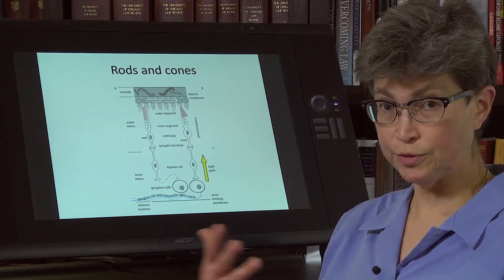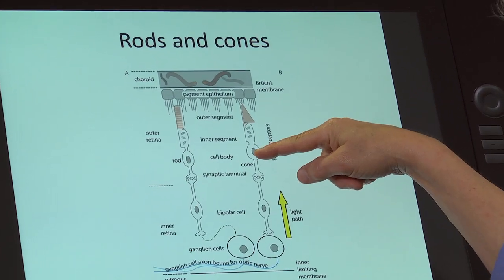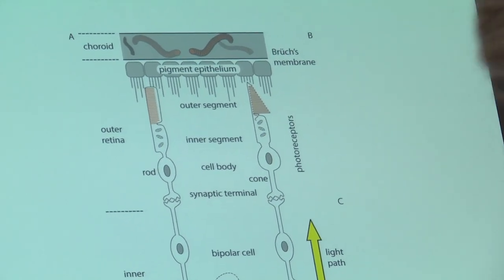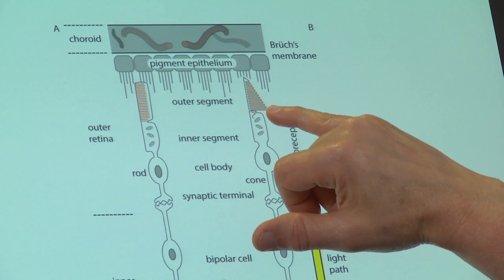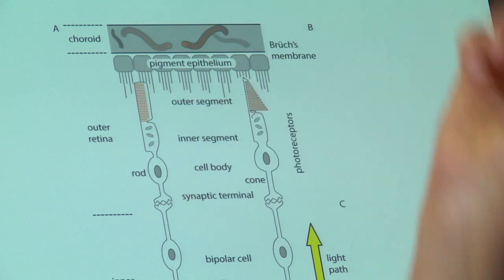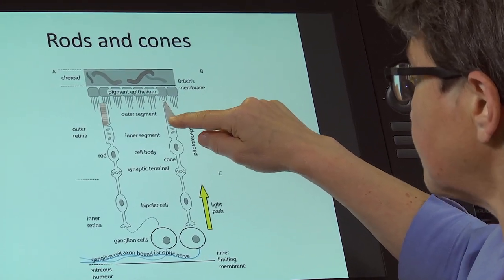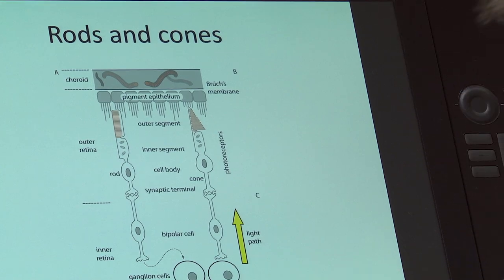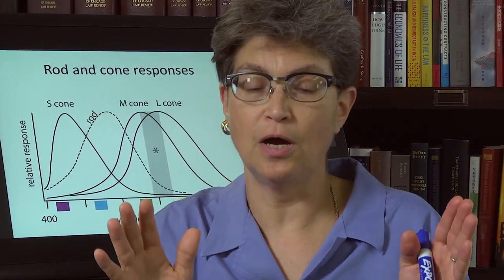One big difference between the rods and cones is their anatomy. If you zoom in on this area, here are the photoreceptors. Here's the cell body, the synaptic terminal, the inner segment where all the manufacturing of proteins occurs. It's right next to the inner segment that the first disks are made for the outer segment. These disks take a different form in the cones and the rods. In the rods, the disks are entirely internalized within the cytoplasm. But within the cones, there is a continual invagination, so the disks are contained on actual layers of plasma membrane.